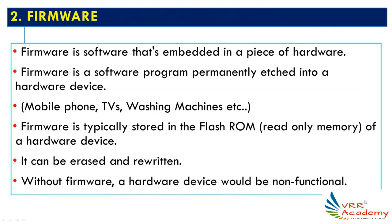The next important topic is firmware. What is firmware? Simply put, firmware equals hardware plus software — that means a piece of software written on a hardware. It is called firmware. This is available in every electronic device. For example, take any mobile phone, switch it off and switch it on again. You will see some programs automatically run — like 'Welcome to Samsung' or 'Android is loading.' Even when you switch on your TV, predefined things will be running. That software already stored in that device is called firmware.